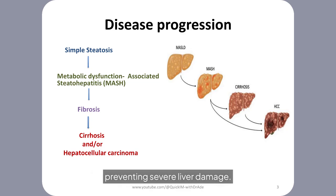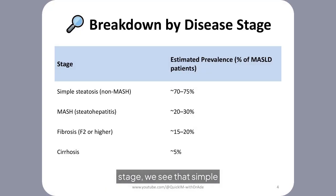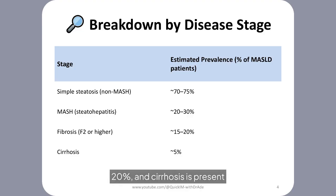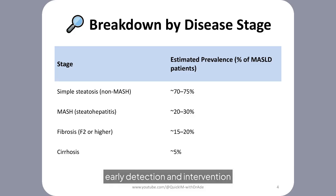Breaking down MASLD by disease stage, simple steatosis affects 70-75% of patients, MASH impacts 20-30%, fibrosis affects 15-20%, and cirrhosis is present in about 5%. These statistics underscore the importance of early detection and intervention in MASLD management.